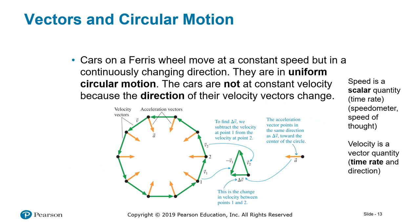Vectors in circular motion. Cars on a Ferris wheel move at a constant speed but in continuously changing direction. They are in uniform circular motion. The cars are not at constant velocity because the direction of their velocity vectors change.